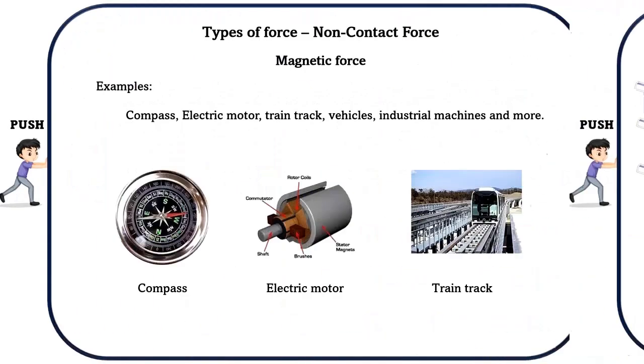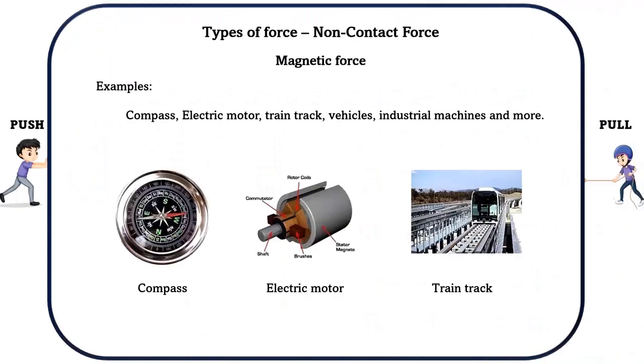Examples of magnetic force include: compass, electric motor, train track, vehicles, industrial machines, and more.